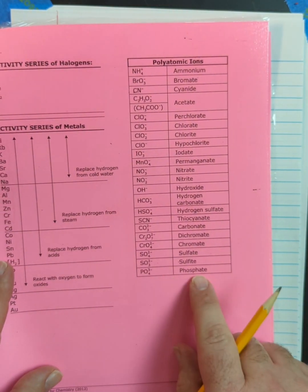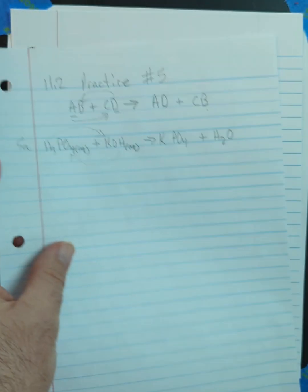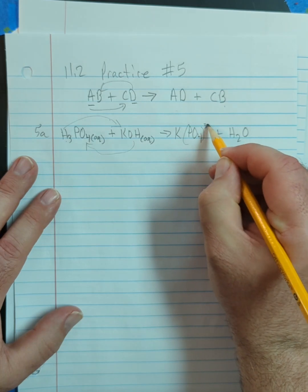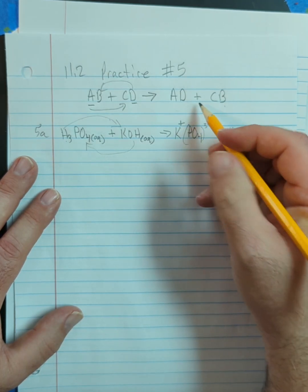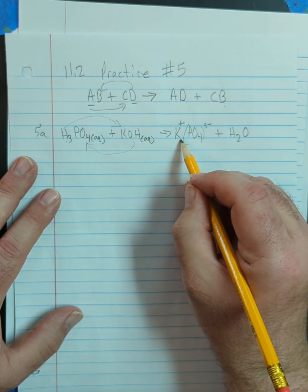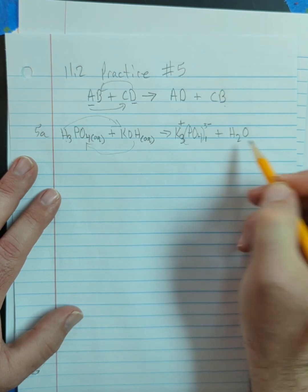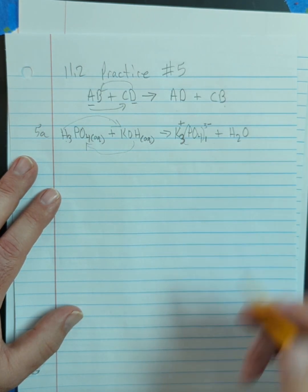Now, we look at our polyatomic ions. Phosphate is PO4 three minus. So if PO4 is three minus and potassium in group one is one plus, then I'm going to need three potassium and one phosphate. That's our formula, K3PO4.